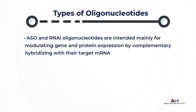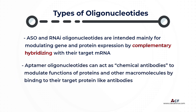While ASO and RNAi oligonucleotides are intended mainly for modulating gene and protein expression by complementarily hybridizing with their target mRNA, aptamer oligonucleotides can act as chemical antibodies to modulate functions of proteins and other macromolecules by binding to their target protein, like antibodies.